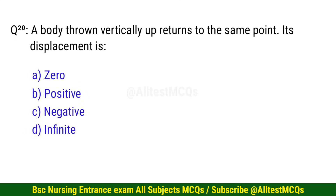Question number 20. A body thrown vertically up returns to the same point; its displacement is? The correct option is A: Zero.